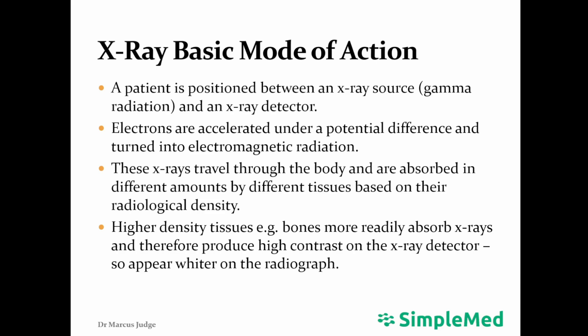The basic way an x-ray machine works is that a patient is positioned between an x-ray source — a source of gamma radiation — and an x-ray detector. Electrons are accelerated under a potential difference or voltage and turned into electromagnetic radiation known as x-rays, which travel through the body and are absorbed in differing amounts based on the density of the tissues they hit. Higher density tissues, i.e. bones which contain calcium, more readily absorb x-rays and therefore produce higher contrasts on the x-ray detector, appearing more white on the radiograph.